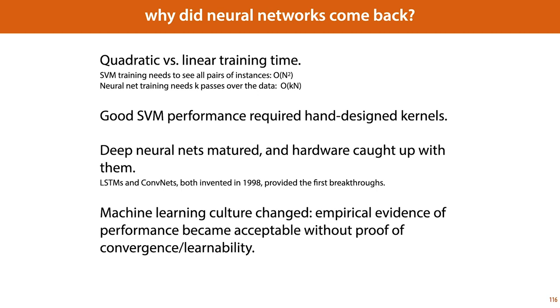The third point is that deep neural nets matured. We figured out how to train deeper and bigger neural networks and hardware caught up with us. Computers got faster and we learned how to use GPUs to train neural networks even quicker. And finally, and perhaps most importantly, there was something of a shift in machine learning culture itself.